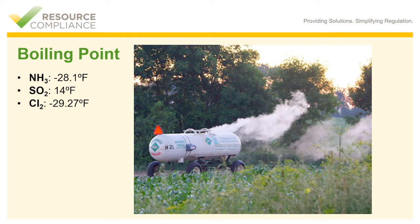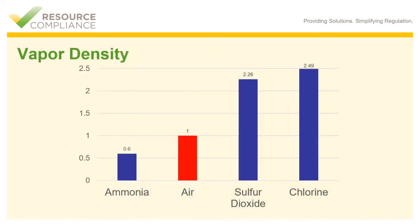First, the boiling point of ammonia is negative 28 degrees Fahrenheit. We think of boiling as hot because water boils at 212 degrees Fahrenheit, but under ambient pressure, ammonia will boil at negative 28 degrees. Being exposed to boiling ammonia will actually result in a freeze burn or frostbite.